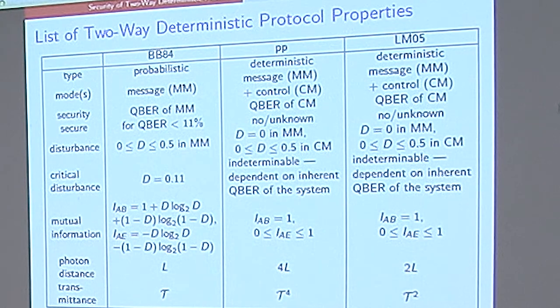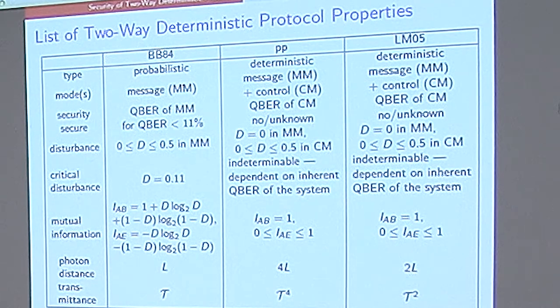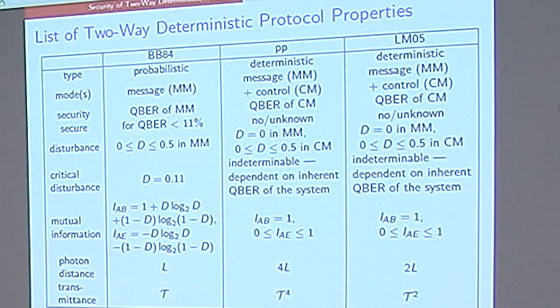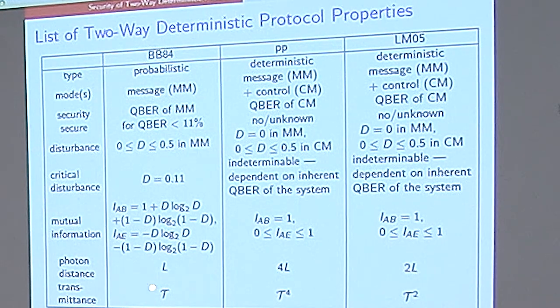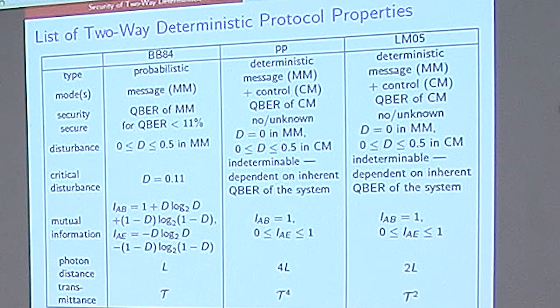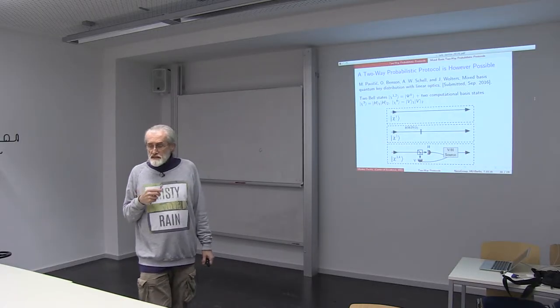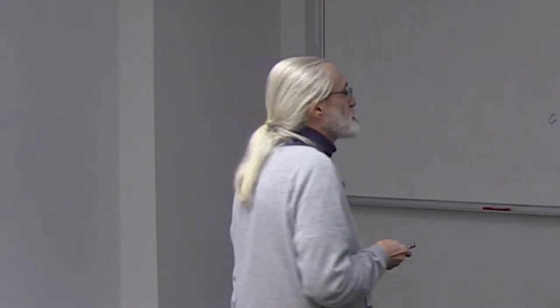The photon distance is twice as long as in the BB84 for LM05, or four times as long for the ping-pong protocol. Because in the ping-pong protocol the photon travels to Alice and back to Bob, and the other photon Bob keeps in his fiber. And the length is four times the distance between Alice and Bob. So it means that the transmittance is transmittance to the fourth in that case, and to the second in the LM05 case. And that also means that such protocols are not suitable for great distances.